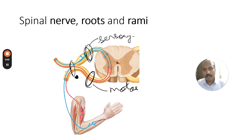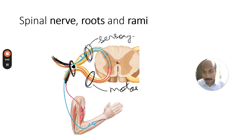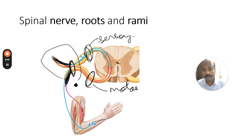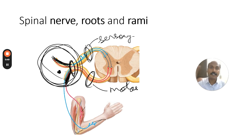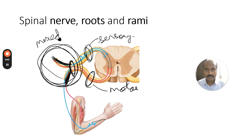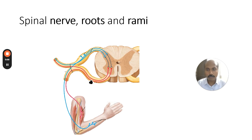The trunk of the spinal nerve is mixed, and the dorsal ramus and ventral ramus of the spinal nerves are also mixed. It is very important to notice that this aspect of the spinal nerve and its branches are all mixed — they will have both sensory and motor functions.